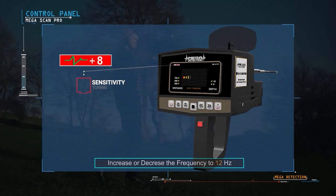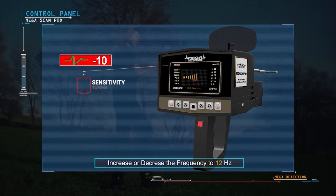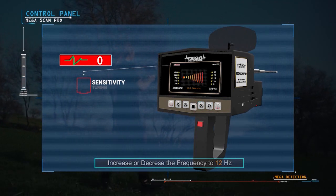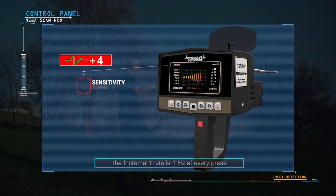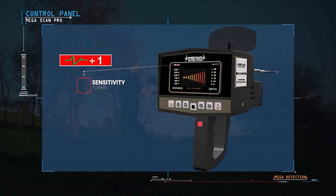The user can increase or decrease the frequency to 12 Hz. The increment rate is 1 Hz at every press. It is preferable to leave the precise frequency on the factory default at zero.